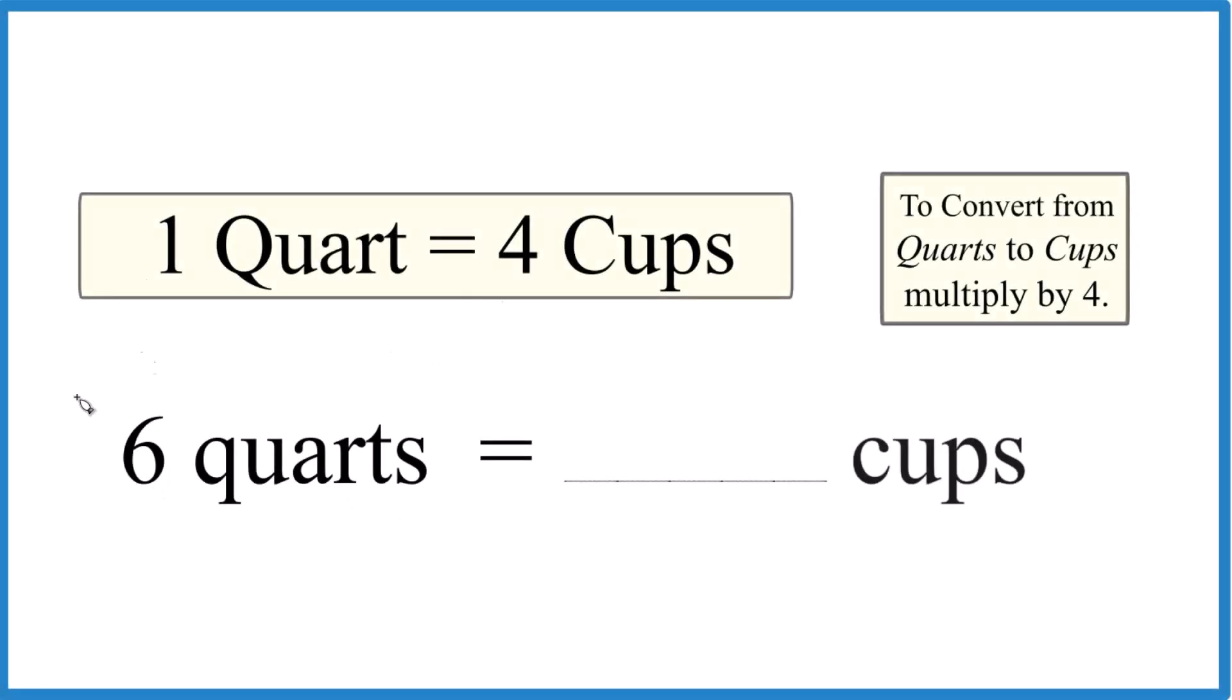So let's say you have six quarts here and you want to know how many cups that's going to be. Here's how you do it. So one quart equals four cups. You just memorize that. We call it conversion factor.